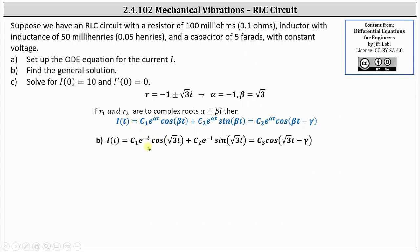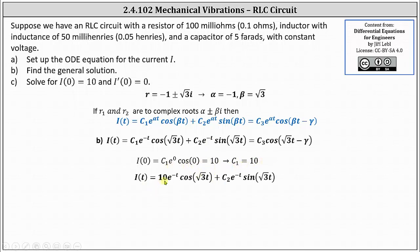When t equals zero, e^0 is one, cosine zero is one, and sine zero is zero. This gives us c₁ times e^0 times cosine zero, and because sine zero is zero, the second term drops out, giving us c₁ equals 10. So I(t) equals 10 e^(−t) cos(√3·t) plus c₂ e^(−t) sin(√3·t).